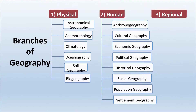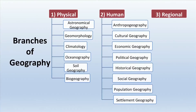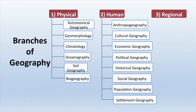Geography mainly has three important branches. First, physical geography — which includes astronomical geography, geomorphology, climatology, oceanography, soil geography, and biogeography. Second, human geography — which includes anthropogeography, cultural geography, economic geography, political geography, historical geography, social geography, population geography, and settlement geography.